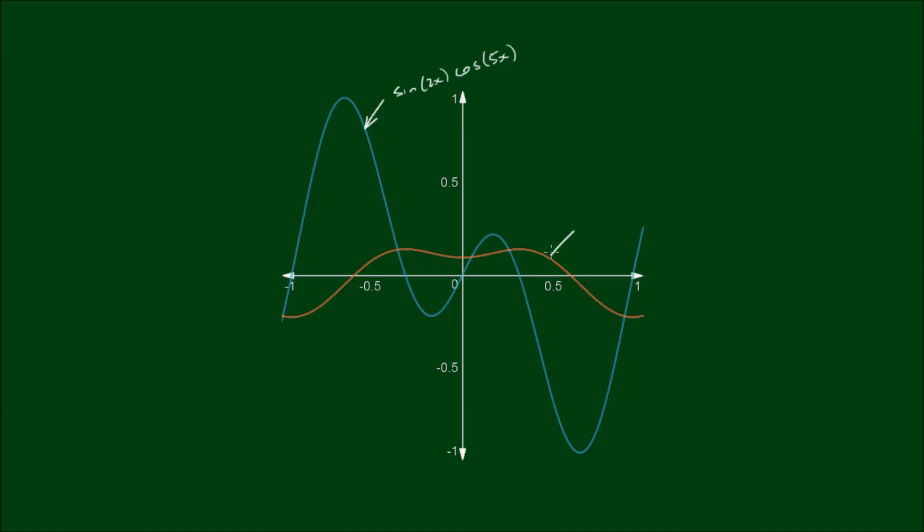This orange curve here is its primitive or its integral. So this is the function 1 sixths of the cosine of 3x minus 1 fourteenths of the cosine of 7x. The integration constant I have set is equal to 0, just for convenience.